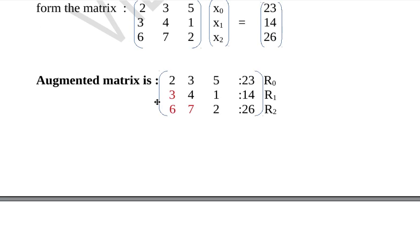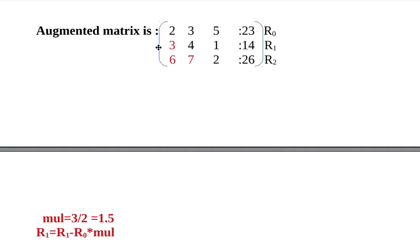For that, we apply row transformations. First we need to identify a pivot row. In the first iteration, the pivot row is taken as the first row. Using the first row, we will change R1 and R2. The first row's first element is taken as the pivot element. We divide each element below it by the pivot element to find the multiplier. R1 is changed to R1 minus R0 times the multiplier. The multiplier is 3 divided by 2, which equals 1.5.